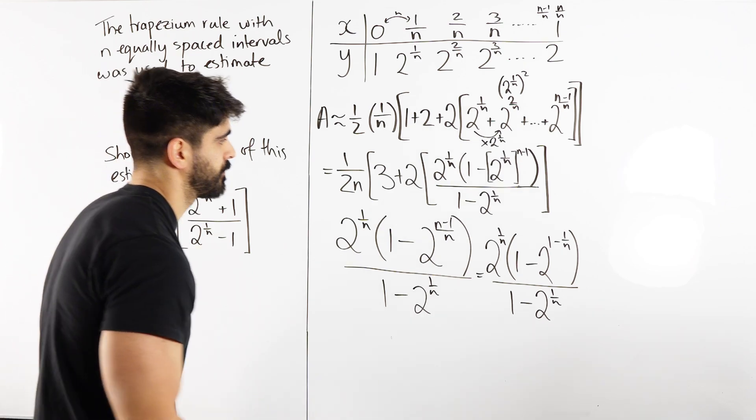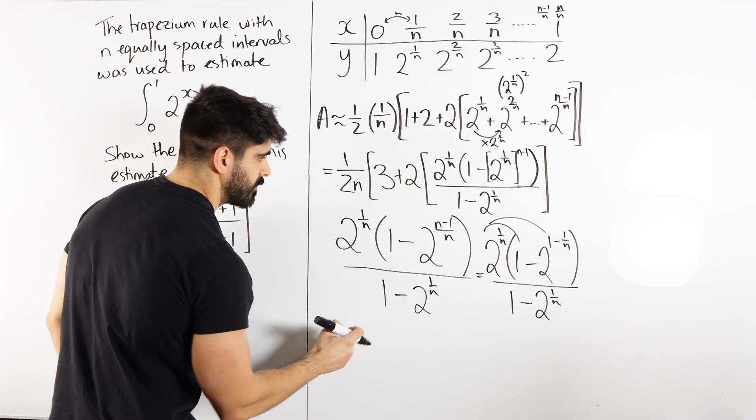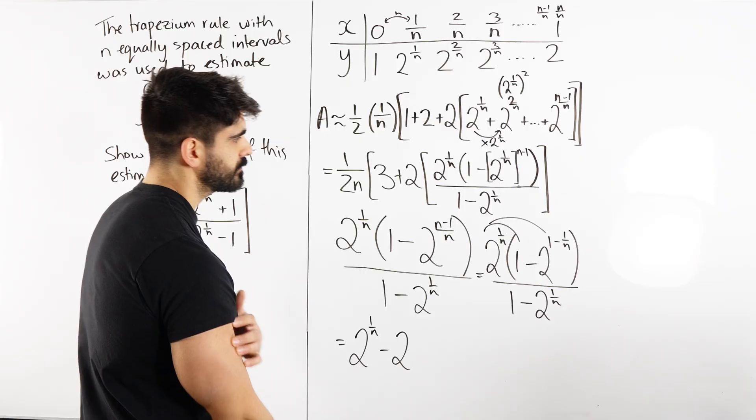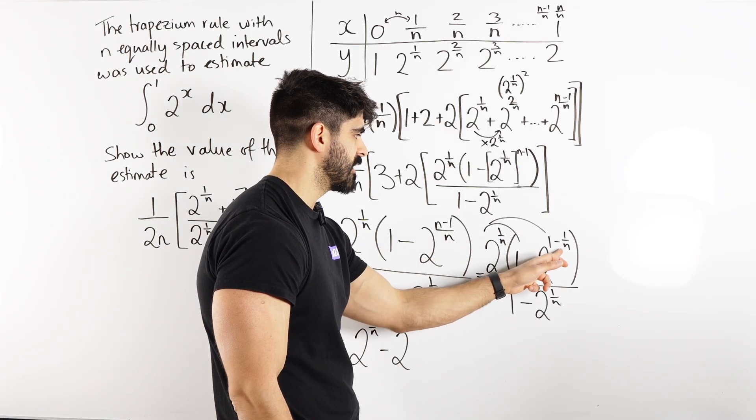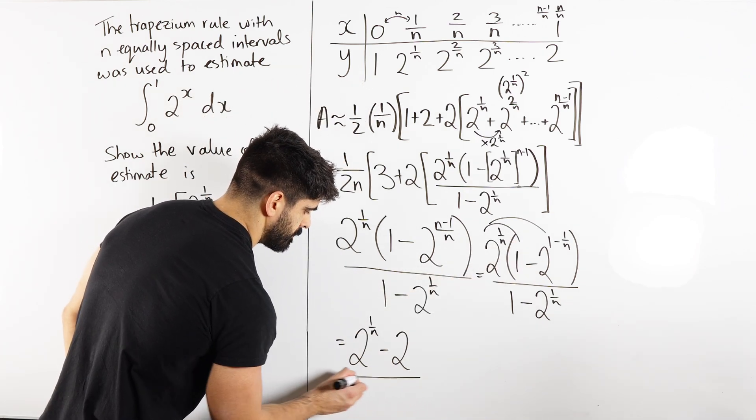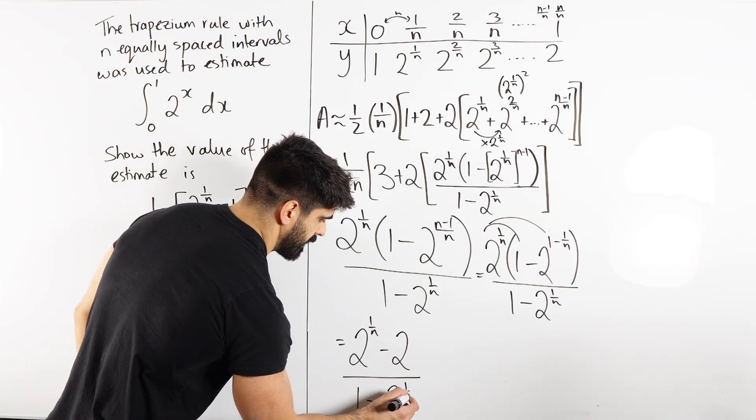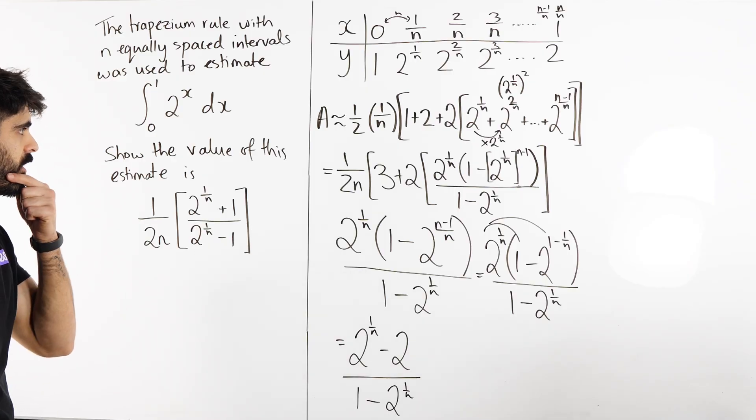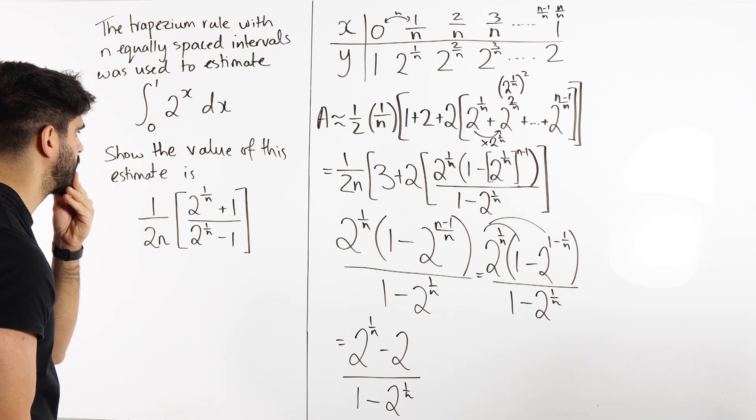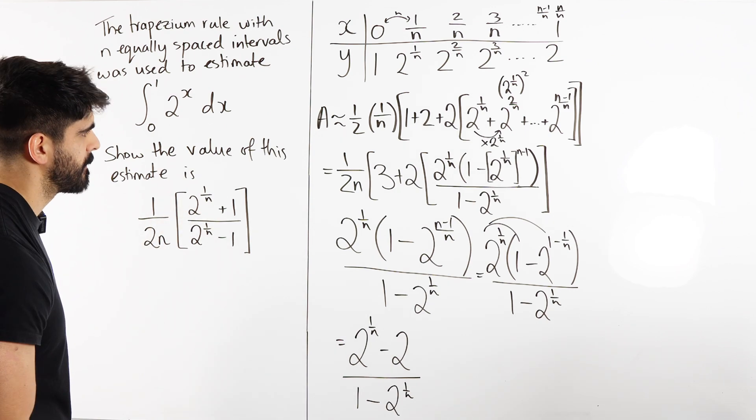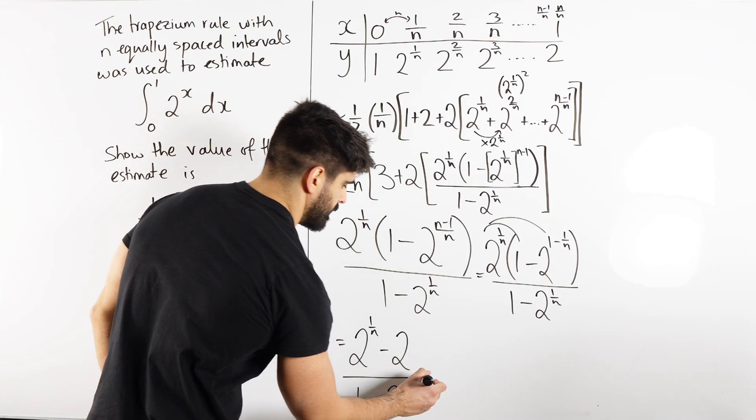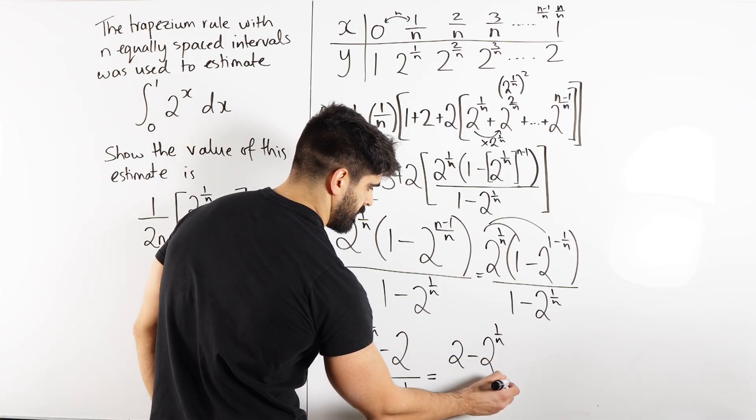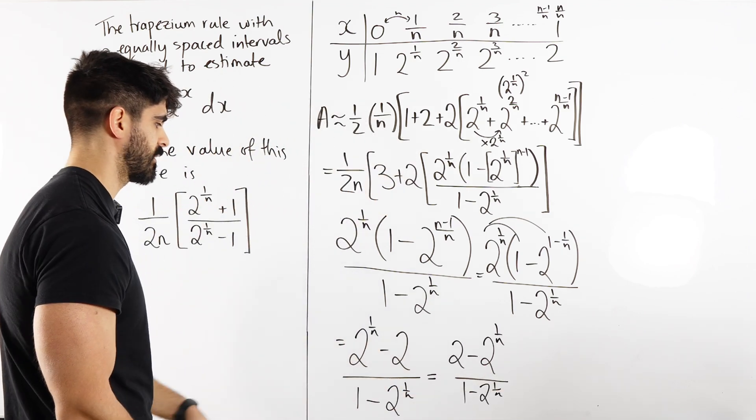Now I think we multiply in the bracket. Multiply that in. What would we have? We would have 2 to the power of 1 over n, 2 to the power of 1 over n minus 2 to the power of n. These are the other way around. That's fine, we could just times top and bottom by minus 1. We do have this 2, this 3 is a bit annoying. So times in top and bottom by minus 1, I'm going to get 2 minus 2 to the 1 over n, all over 1 minus 2 to the 1 over n.